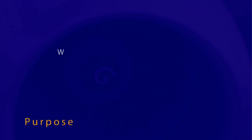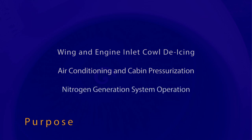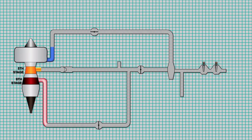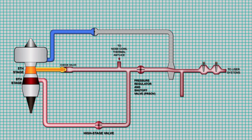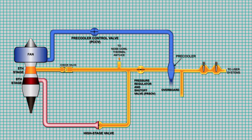The 737 Bleed Air System supplies engine compressor air for wing and engine inlet cowl de-icing, to the air conditioning packs for air conditioning and cabin pressurization, and for nitrogen generation system operation. The system uses 9th stage air during low power settings and 5th stage air during higher power settings. Note that bleed air is extremely hot and must be cooled before being sent to the AC packs. The pre-cooler is an air-to-air heat exchanger that uses engine fan air to cool the bleed air. The system is controlled using a series of valves, temperature sensors, and pressure sensors.